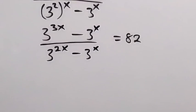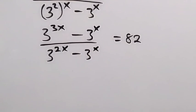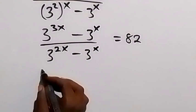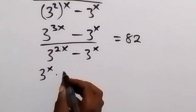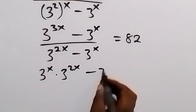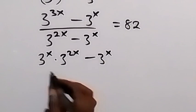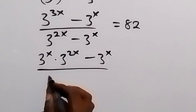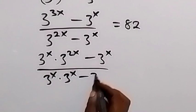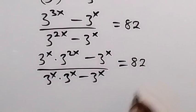Then from here, let's factor 3 raised to the power x out. That is, we can write the numerator as 3 raised to the power x times 3 raised to the power x, minus 3 raised to the power x. Also from the denominator, we can write that as 3 raised to the power x, then minus 3 raised to the power x equals to 82.